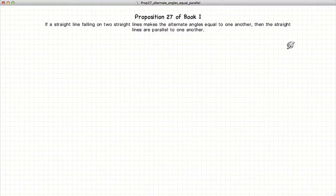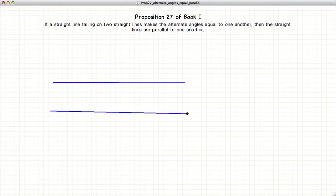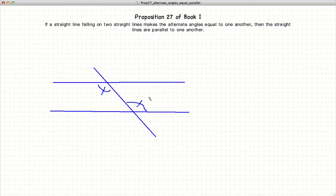This video presentation is going to be on Proposition 27 of Book 1, which states that if you have two straight lines and another straight line falling on those two straight lines, then if the alternate angles, in this case this would be the alternate angle to this, are equal to one another, then the original two straight lines are parallel.